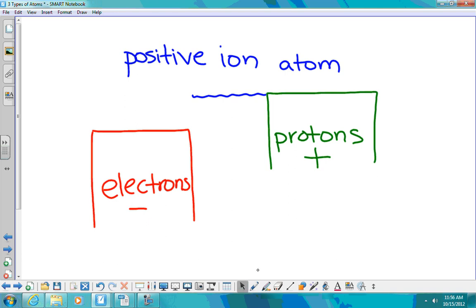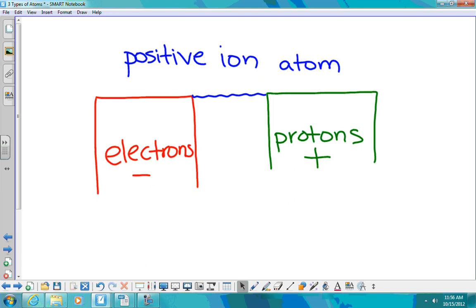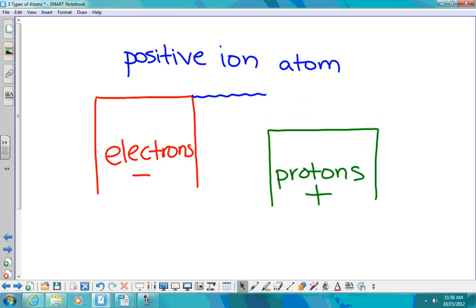But if we do just the opposite and I take away a proton, I now have a negative because I have more negative charges. Negative ions.